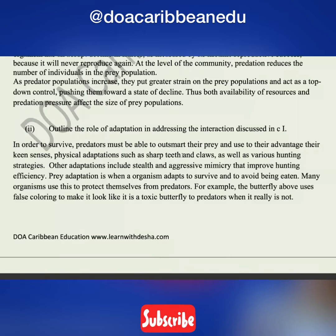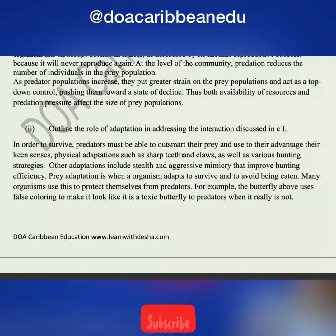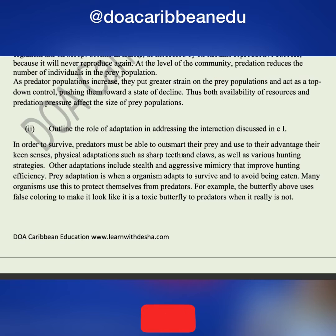Lastly, outline the role of adaptation in this same interaction — how have predators or prey adapted to surviving in their ecosystem? On the predator side, predators must be able to outsmart their prey using advantages like senses, physical adaptations such as sharp teeth and claws, and hunting strategies like camouflage. On the prey side, organisms adapt in many ways to avoid being eaten.